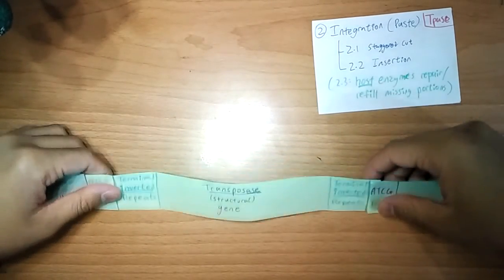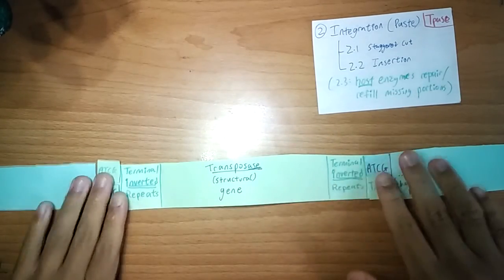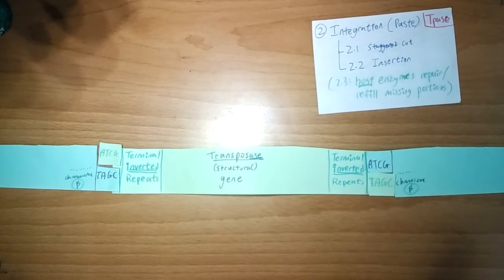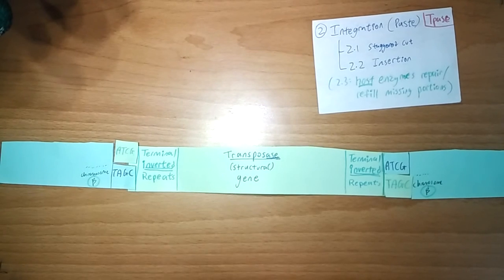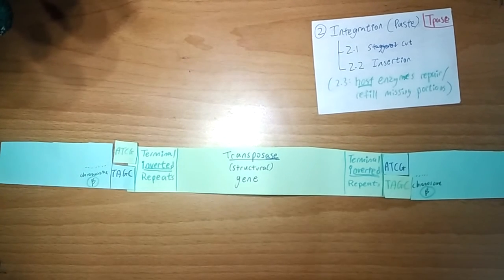And that is basically the mechanism for the cutting and pasting, the transposition of DNA transposons. And the next video, we have the mechanism for the transposition of RNA transposons. Thanks for watching. Bye.